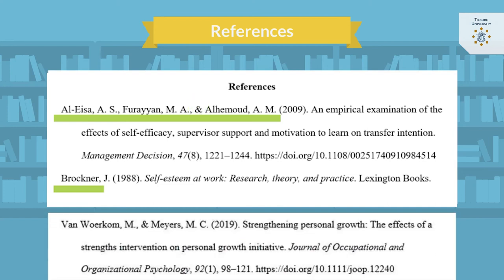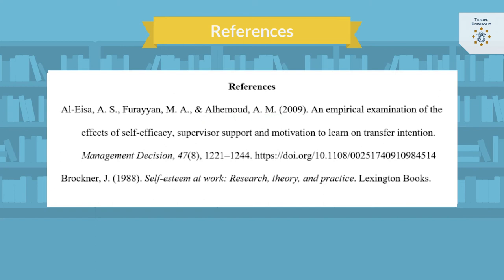Please note that infixes such as 'van' or 'de' should be treated as part of the last name. After the author or authors comes the date. In the case of journal papers, use the year the volume was published. When it comes to books, use the copyright date. The date is between brackets, followed by a period after the closing bracket.